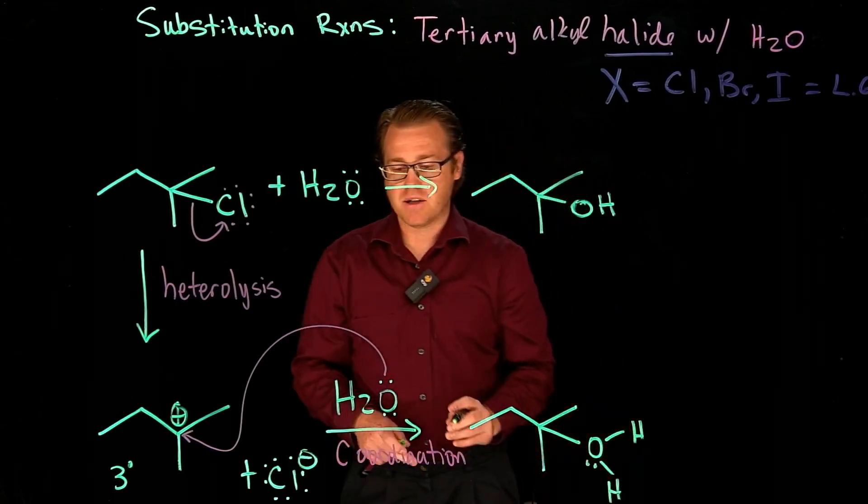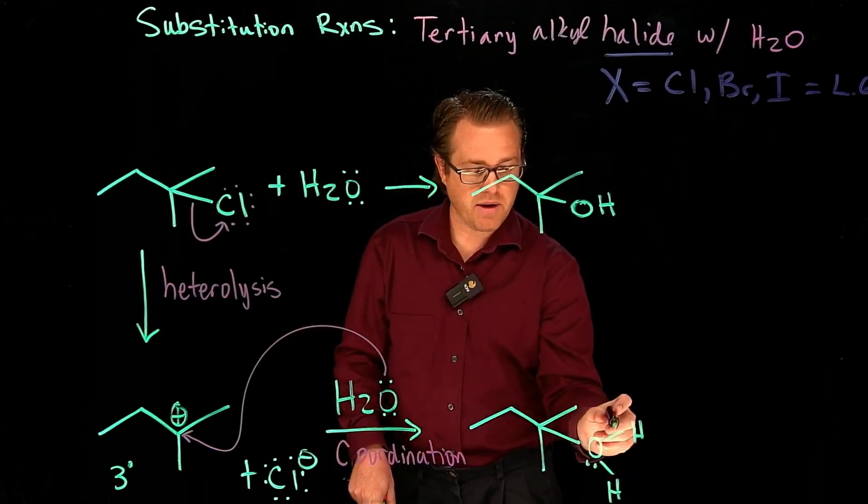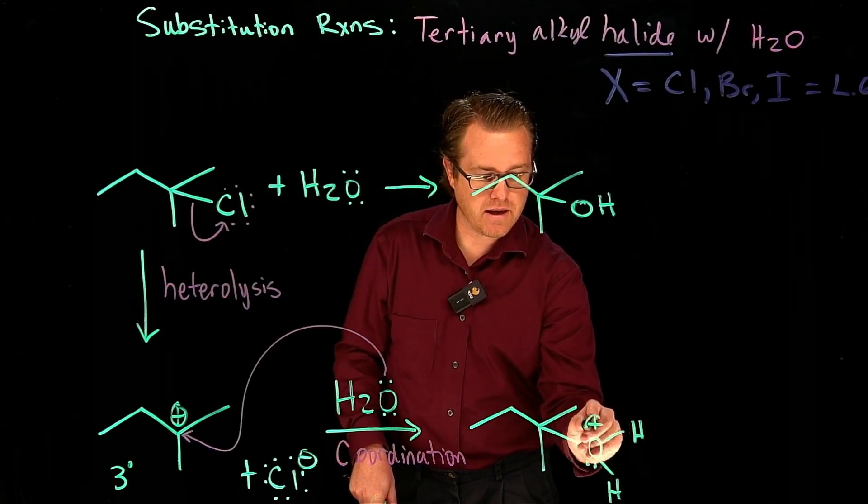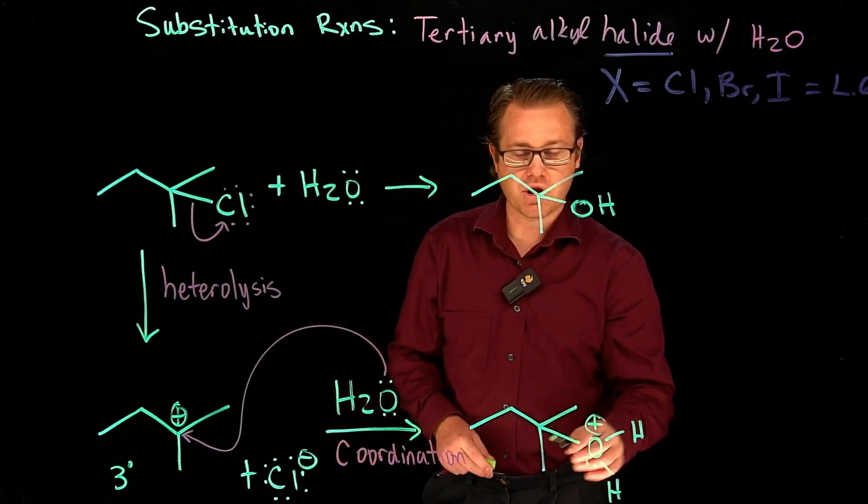And so now we have an oxygen atom with three bonds and one lone pair, so that's going to give us a formal charge of plus one.